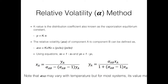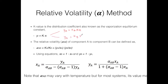The second method to calculate xa and ya is the relative volatility method using the alpha constant. The K value is the distribution coefficient, also known as the vaporization equilibrium constant, and it relates the mole fraction in the liquid phase to the mole fraction in the gas phase. The relative volatility alpha-ab between components a and b is defined as ka divided by kb, which equals (ya/xa) divided by (yb/xb).